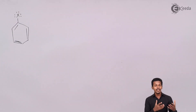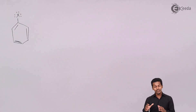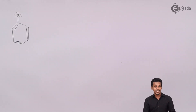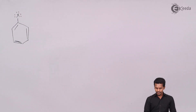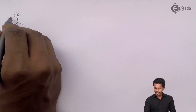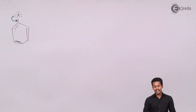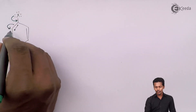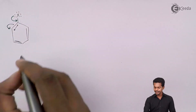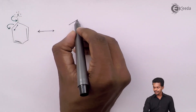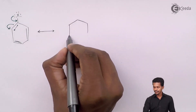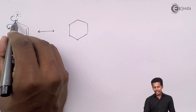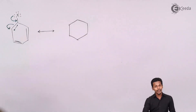Because of the higher electronegativity, there will be delocalization of electrons, and thereby we get the following resonating structures. The shifting takes place such that we find a carbon-carbon double bond. When talking about these two electrons, they are responsible for acquiring a negative charge on this carbon atom. Basically here we have found a carbon-halogen double bond.